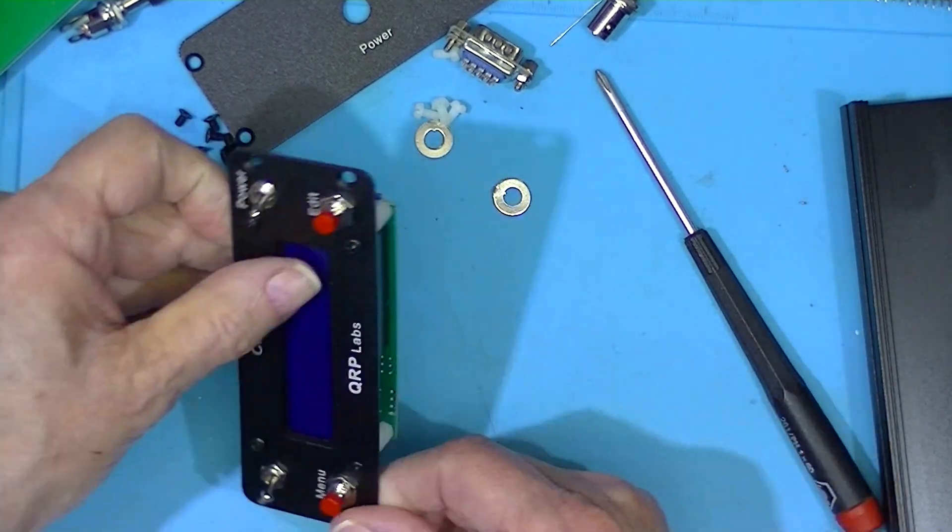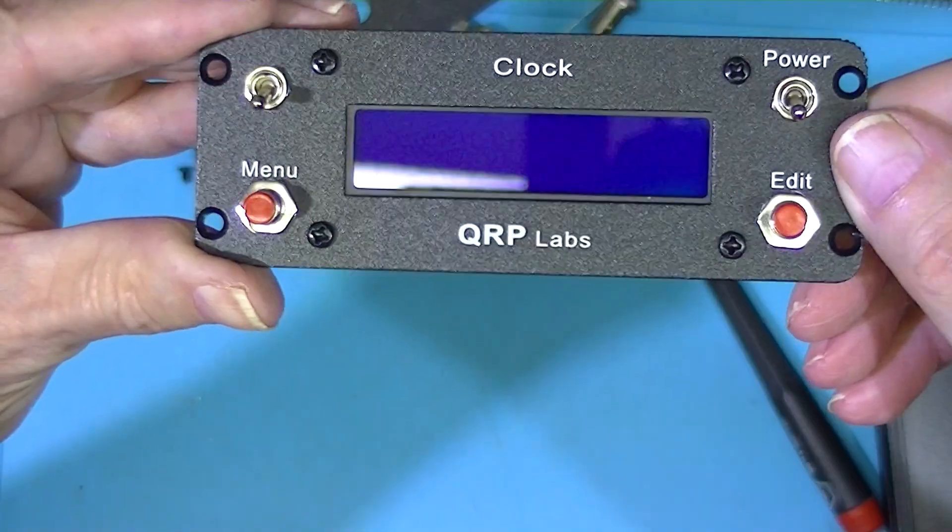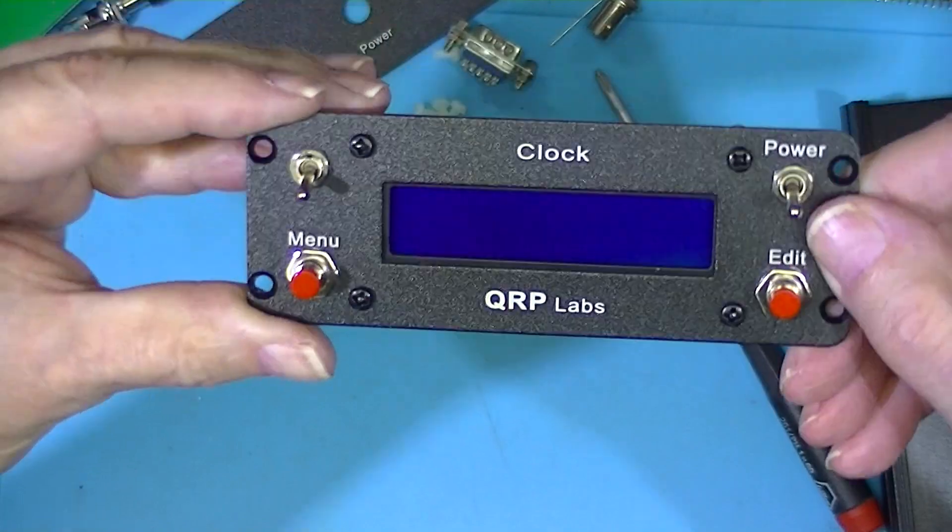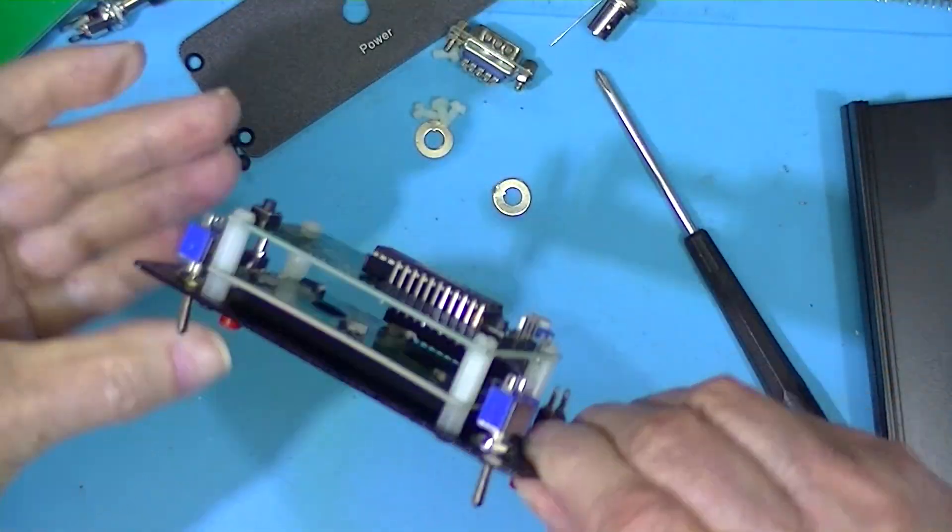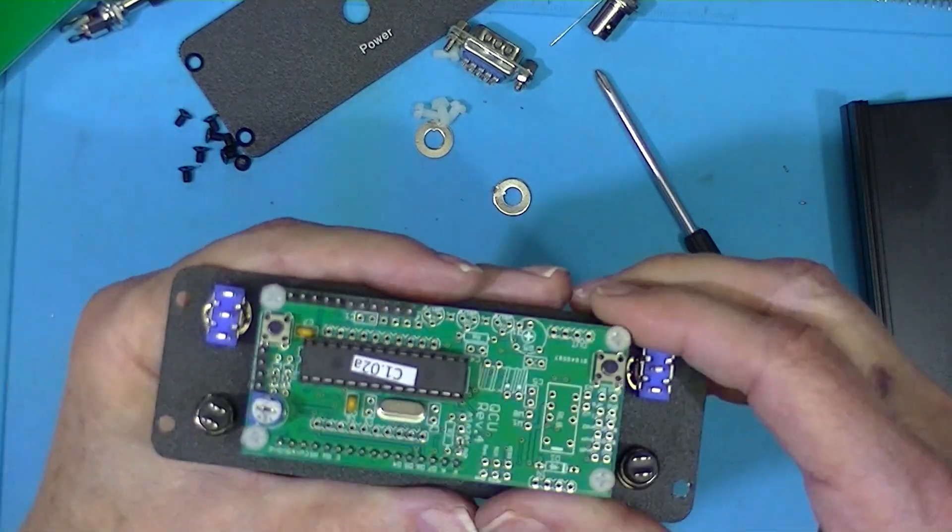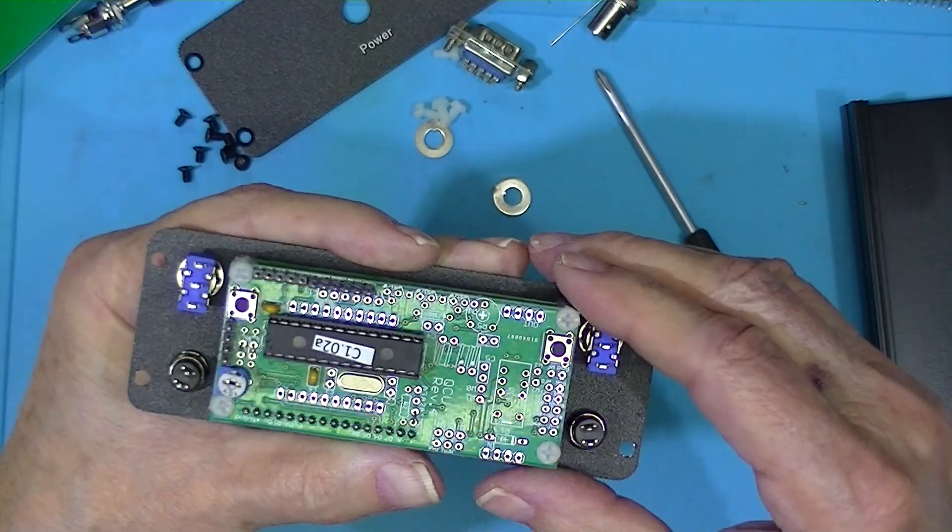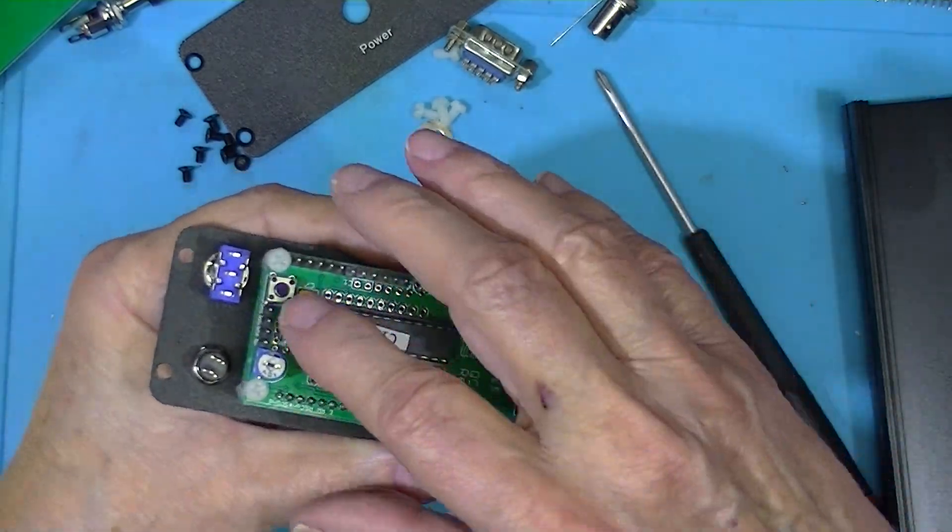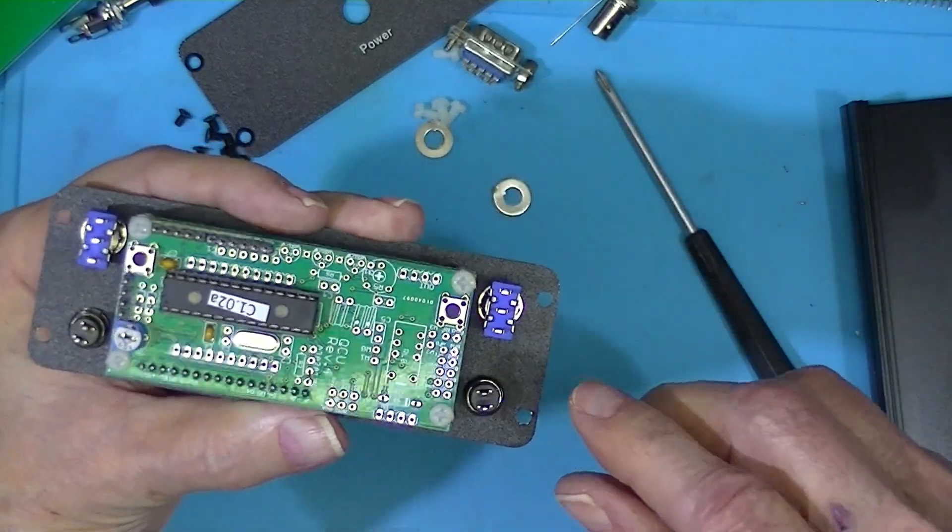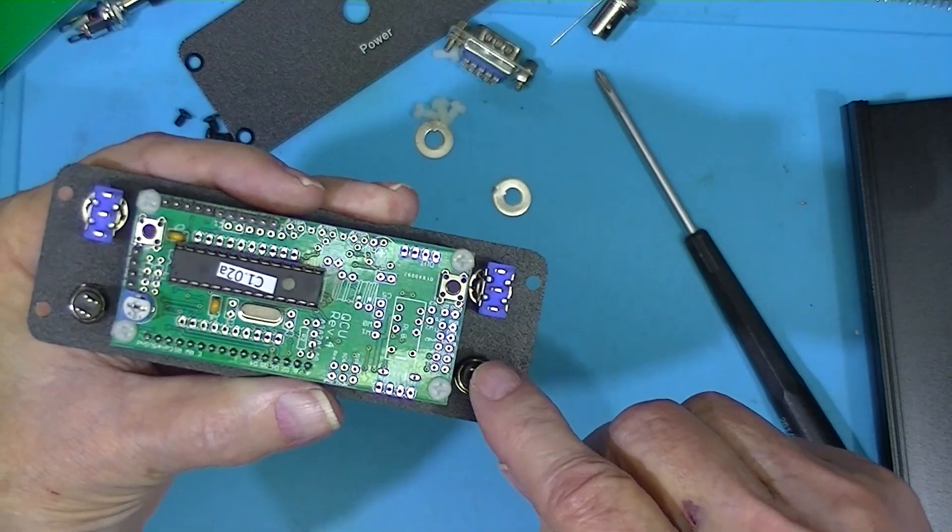So there we go—it's a nicely done front clock. All of the connections that we have to do to the clock are here and here, and the push buttons are in the back. Now I'm going to wire these push buttons to these push buttons.